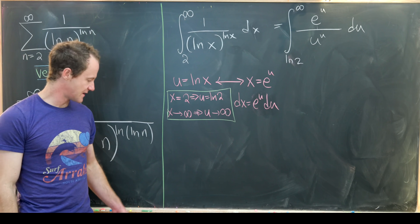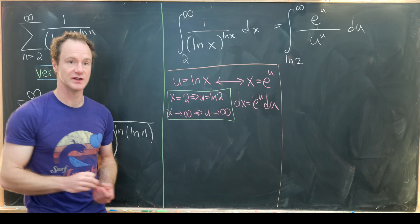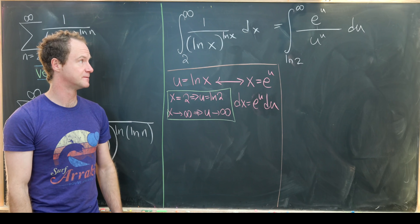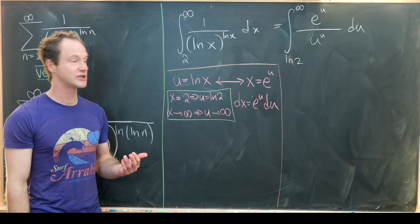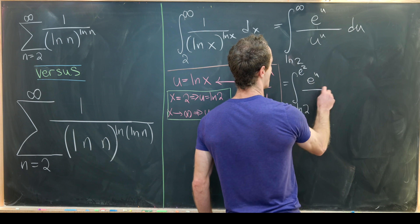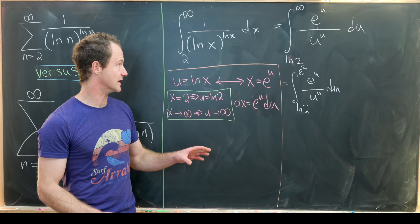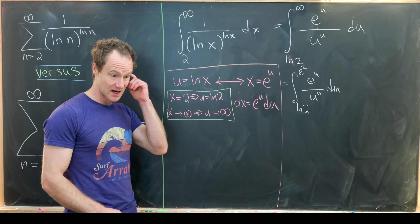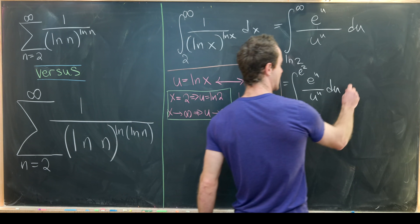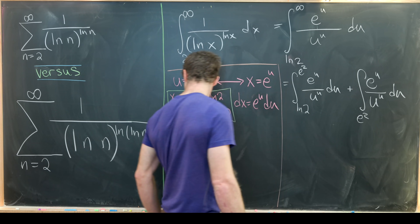Our best strategy is to split this into two integrals: one over a finite region, and another we can compare to something that obviously converges. I'll let the cat out of the bag — this thing converges. I'll choose e squared as the turnover point. So we get the integral from natural log of 2 to e squared of e to the u over u to the u du — that's a finite number, so it doesn't affect convergence. What matters is the tail, starting at e squared.